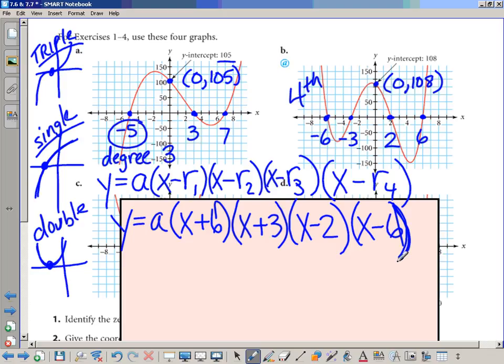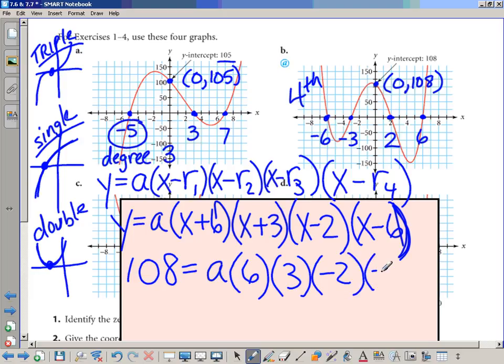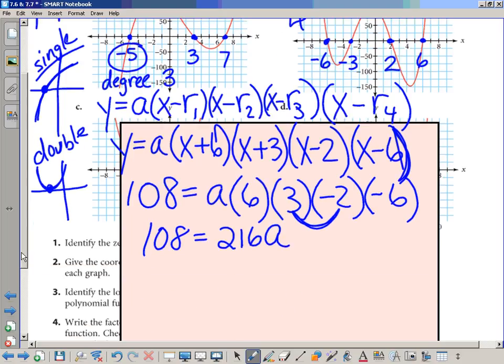A little smart board trouble here. I hope it clears up. So let's go ahead and plug in (0, 108). So 108 is going to go in for y. If x is zero, we're going to have A times 6 times 3 times negative 2 times negative 6. Okay, so we have a fourth degree equation, and it looks like, what do we got here? We're 6 times 6 times 6, right? These two guys make 6 times another 6 is 36 times another 6 is 216.